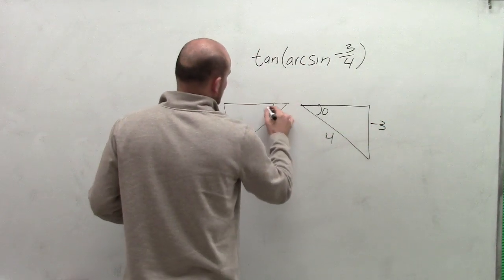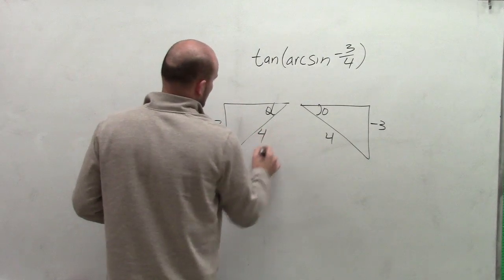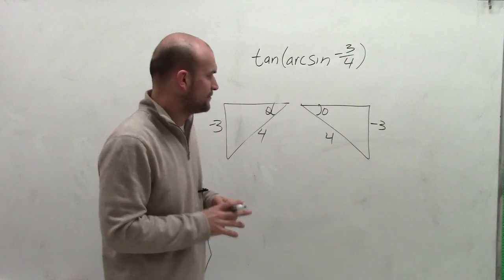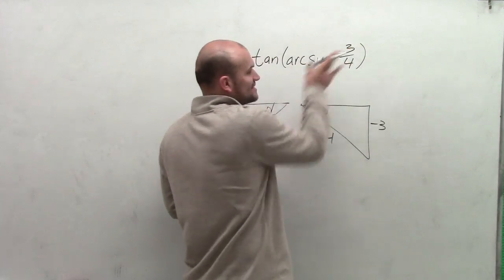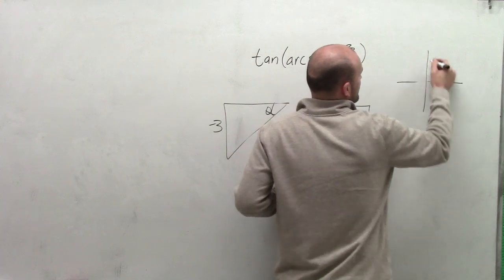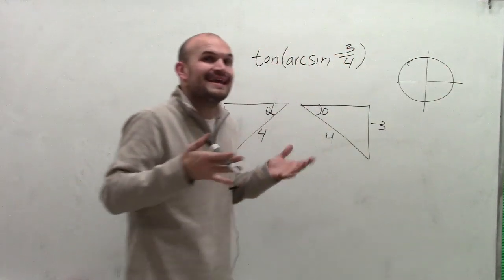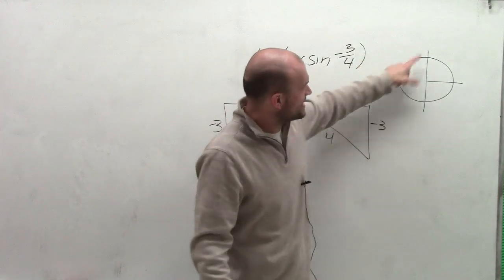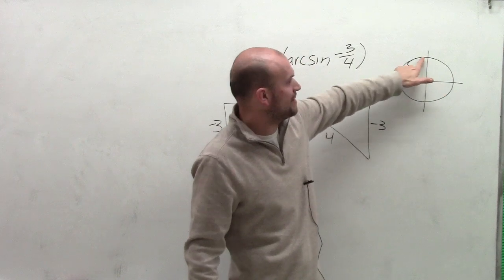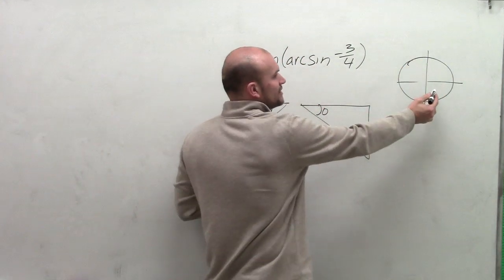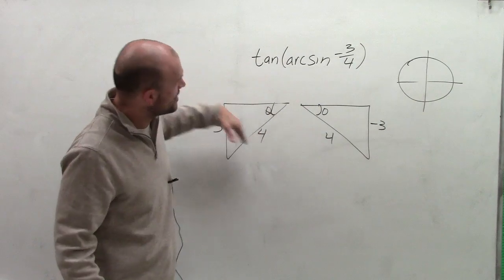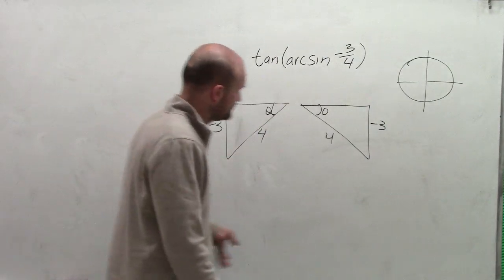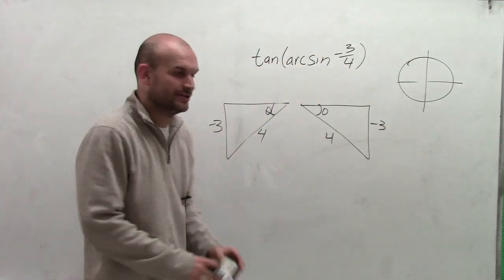Or I could have a triangle here where theta is placed differently, with negative 3 over 4. Remember, your hypotenuse is always going to be positive, so my opposite side is going to be negative 3. But since I'm taking the arc sine, I need to make sure the angle falls within the range of my function. Therefore, my angle has to fall between negative pi halves and pi halves, meaning this triangle has to be in the fourth or first quadrant. This triangle, as drawn, lands in the third quadrant, so it will not fall within the range and I can't use it.